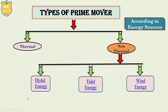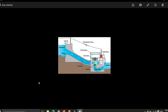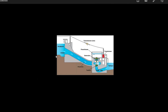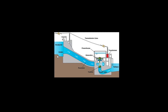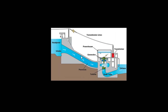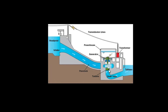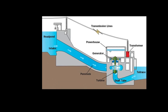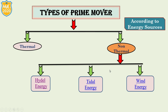Now we understand each one. Hydro energy is the electrical energy produced through the power of moving water. Here electricity is produced through the power of moving water. Second is tidal energy, which is produced by the surge of ocean water during the rise and fall of tides.